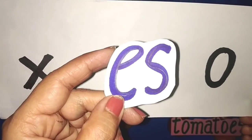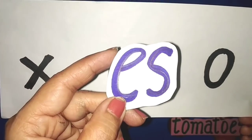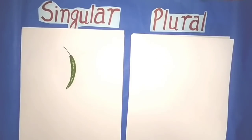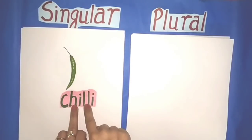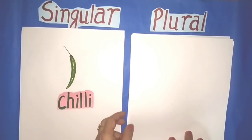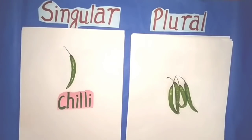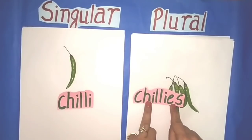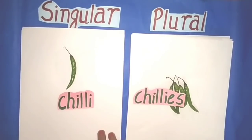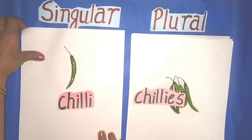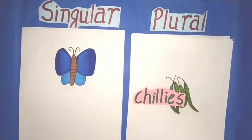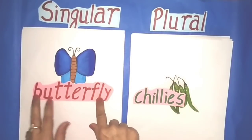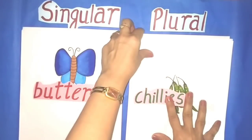Students, the nouns which end with X, CH, and O — for such nouns we write ES at the end of the word. Here you can see: chili — and for more than one chili we will write chilies.